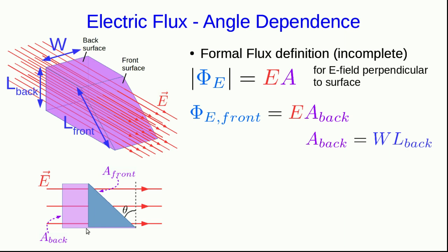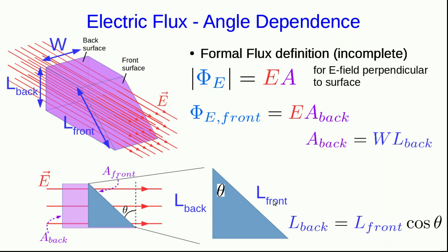We can get that from this triangle. I'm going to pop that triangle out. This side is l_back. This side is l_front. This angle theta here is the same as the angle in the top corner of the triangle. And so l_back is just l_front cos θ.